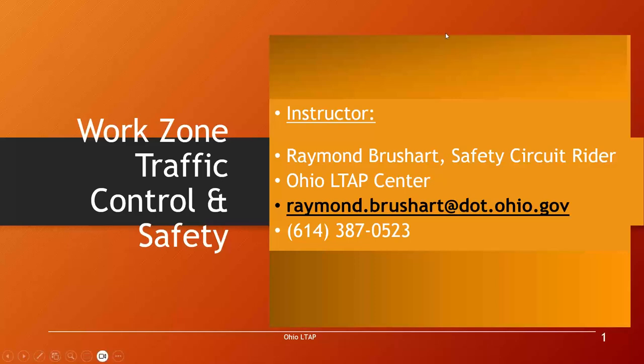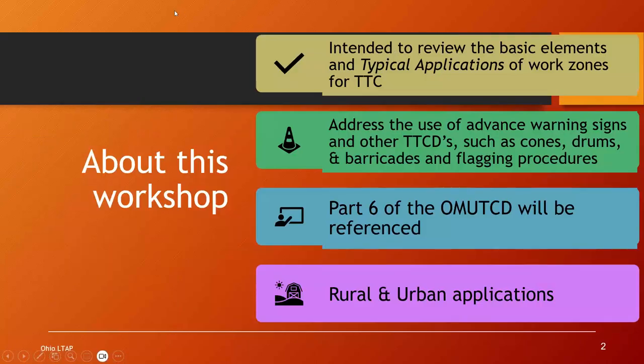Let's go ahead and begin. Each part of this webinar series is about an hour and a half, and today we're going to cover a lot of general information about work zones and where to find valuable work zone information. We'll get to learn about some manuals you need to know about and how to find them online. We'll first learn about the Ohio Manual of Uniform Traffic Control Devices, otherwise known as the OMUTCD.